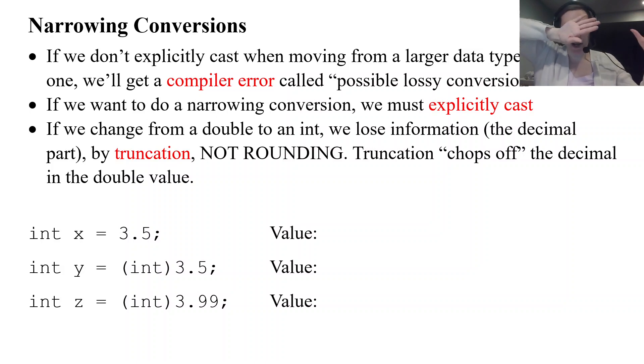Not rounding. Truncation basically chops off the decimal in the double value and says we're going to throw away decimal and everything behind the decimal. And we're just going to keep that whole number. Not rounding. We do not round with a narrowing conversion. We truncate.